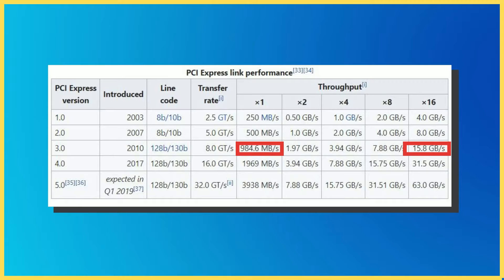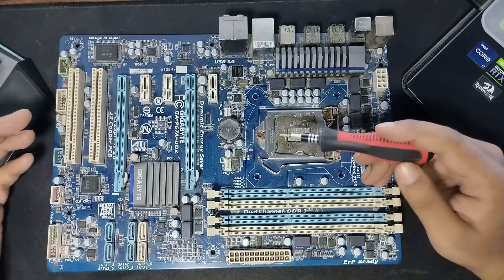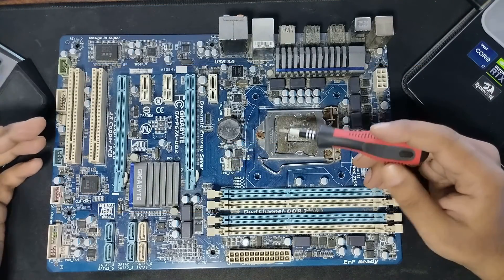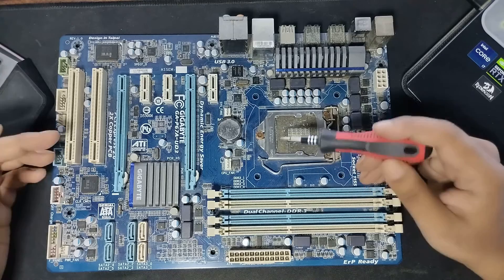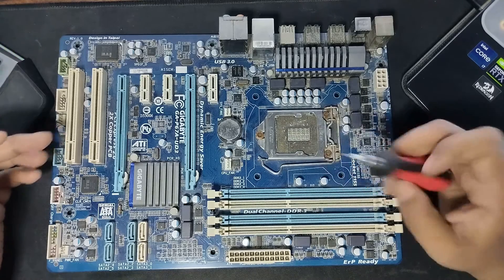It is also worth noting the importance of PCIe version. With each newer version, the per-lane PCIe speed doubles, so much so that an X1 slot conforming to version 4.0 has twice the bandwidth at almost 2 GB per second compared to its version 3.0 counterpart. The version is very important to note if you have newer devices like a Gen 4 SSD or a newer GPU from the Nvidia RTX 4000 series.